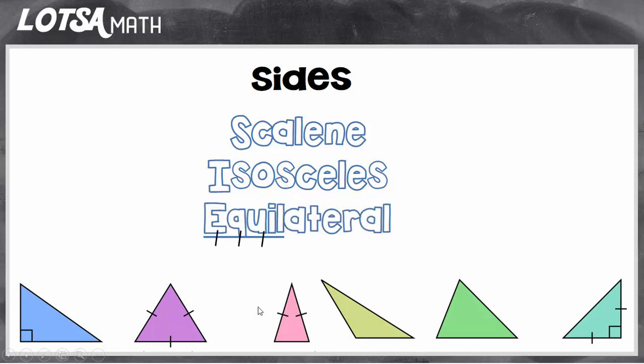The last type of triangle classified by sides is called an equilateral triangle. I can remember this because of the word 'equal.' In an equilateral triangle, all three sides are equal. In this purple triangle we can see that each side has the same tick mark, showing the lines are the same length. That's how you classify a triangle by its sides.